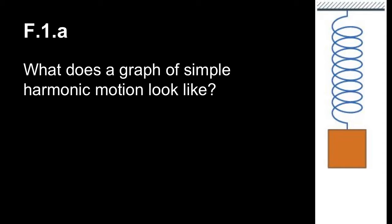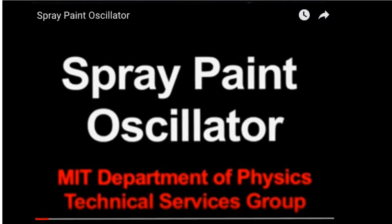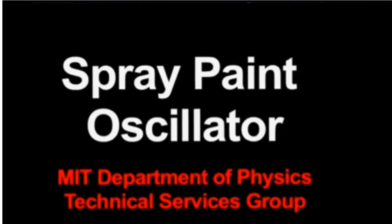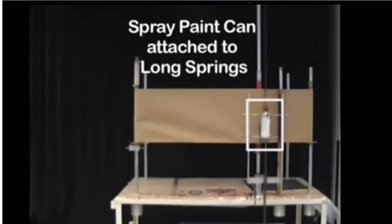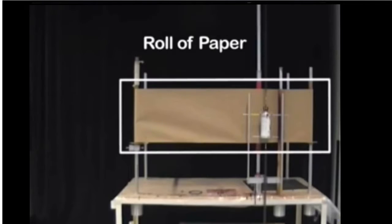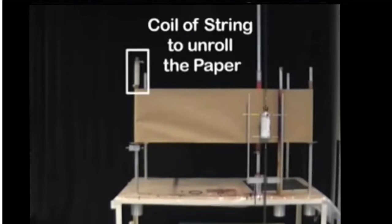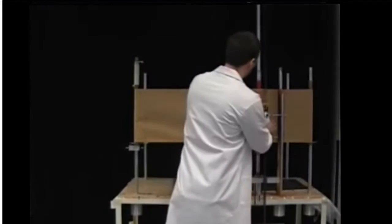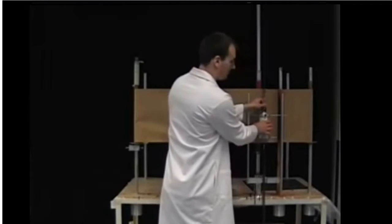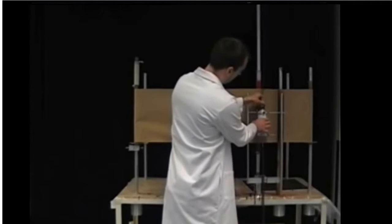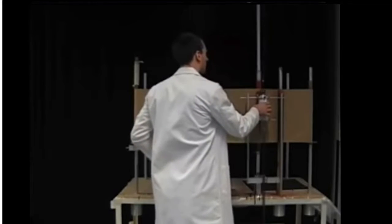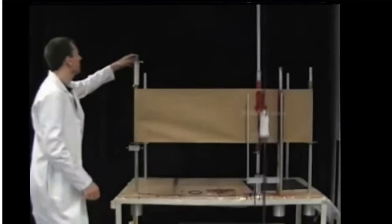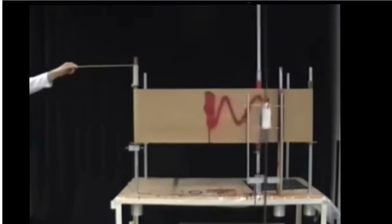Standard F1a talks about what the graph of this is going to look like, so we're going to take a look and see what that is. The MIT physics department made a video where they took a can of spray paint, put it on a spring so it oscillates up and down and sprays on a roll of paper. They pull that paper at a constant speed, which gives us a graph of the y position — or x position — as a function of time.